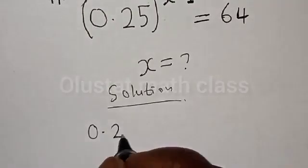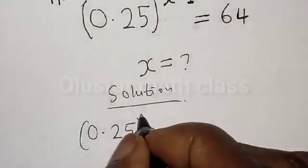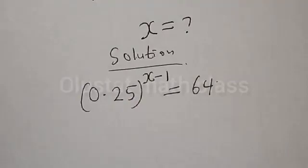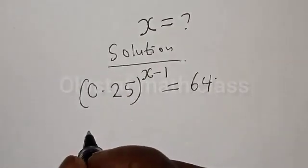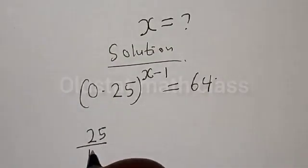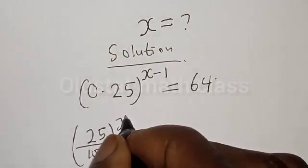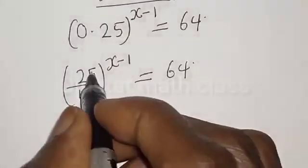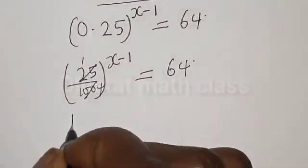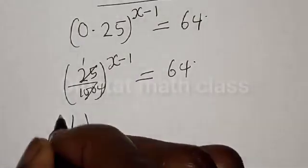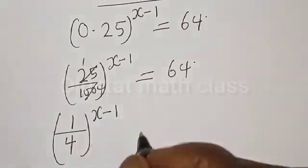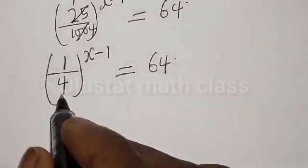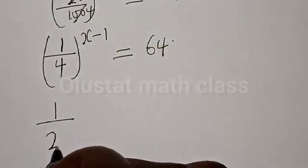We have the given equation: 0.25 raised to power x minus 1 is equal to 64. Now 0.25 is the same as 25 divided by 100, raised to power x minus 1, is equal to 64. Simplifying, 25 over 100 gives us 1 over 4, so we have 1 divided by 4, raised to power x minus 1, is equal to 64. And 1 over 4 can be expressed as 1 divided by 2 squared.